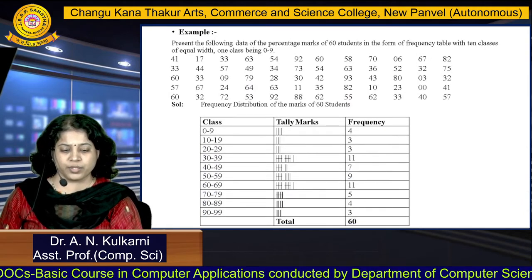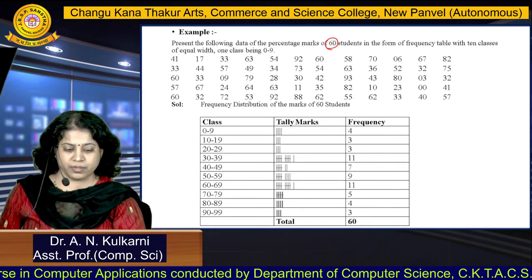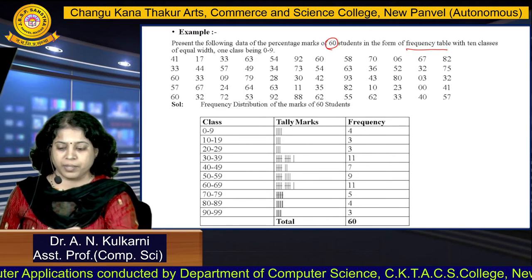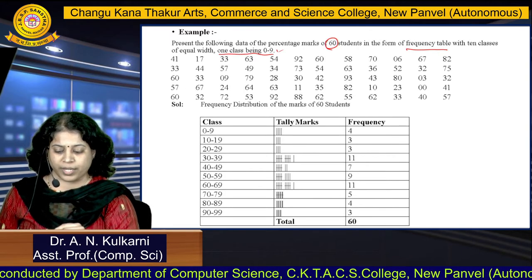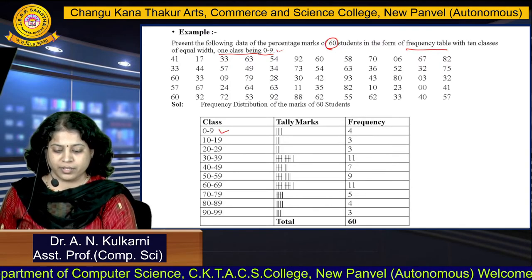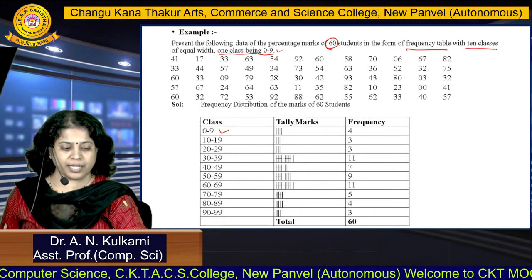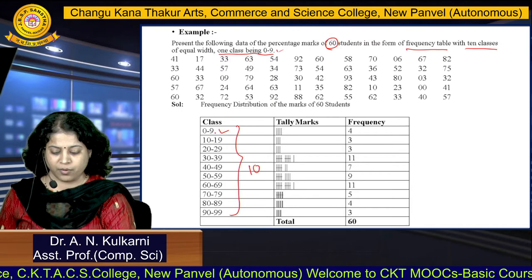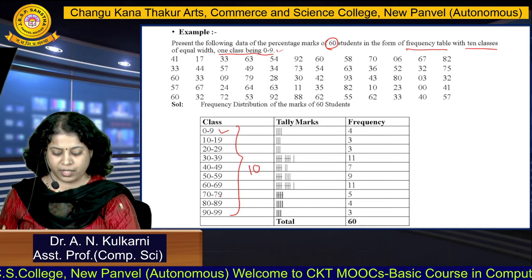For the next example, data of 60 students is given and we have to construct a frequency table. Here the class interval is already given, starting from 0 to 9, with equal width and 10 classes: 0–9, 10–19, 20–29, and so on up to 90–99, since the data set contains values up to that range.